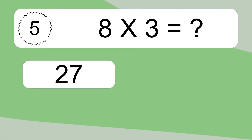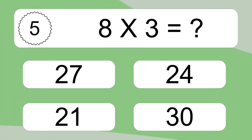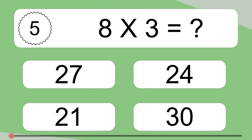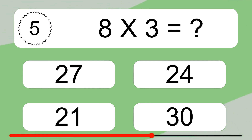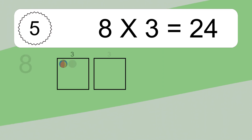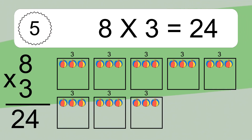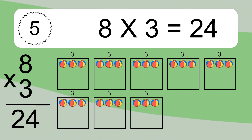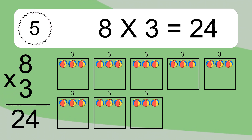8 times 3 equals what? 8 times 3 equals 24. We have 8 boxes, and each box has 3 colorful balls inside. If you count all the balls in all the boxes together, you will have 8 times 3 balls. This equals 24 balls.